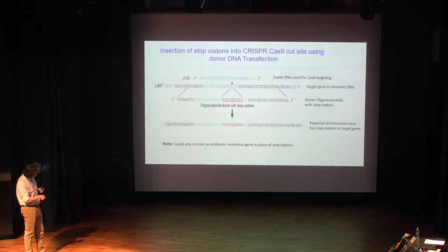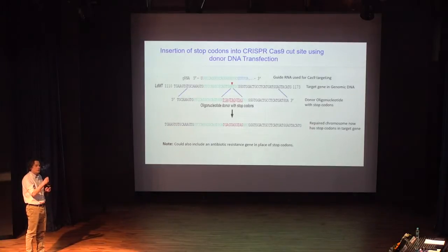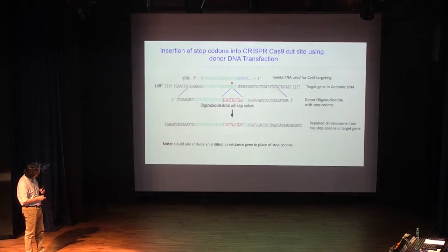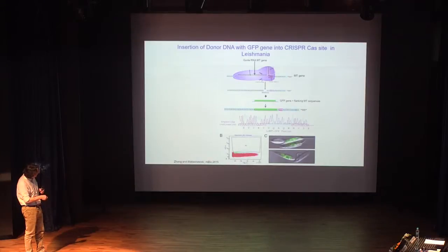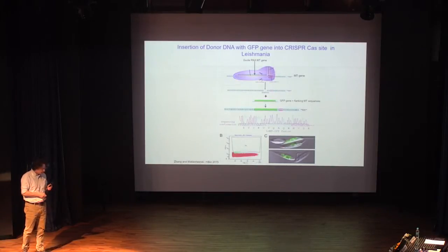Another thing you can do with a donor sequence is cut the chromosome — for example the miltefosine transporter — and add a sequence to integrate within its stop codons, which would stop expression of the protein. Or you could change a nucleotide, changing one amino acid for another. So you can do even point mutations within the genome using this approach. You can also cut the chromosome and integrate a gene — in this case the GFP gene — exactly where you want it, and select through FACS analysis those parasites that have integrated it.